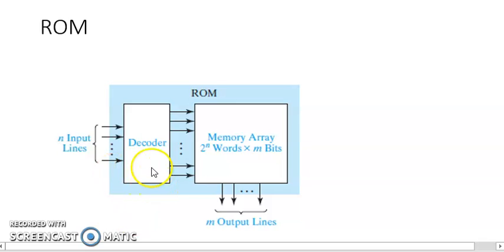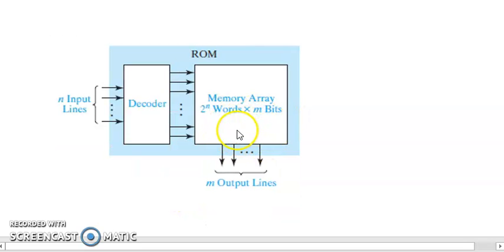ROM basically consists of a decoder and a memory array. When a pattern of n zeros and ones is applied to the decoder input, exactly one of the 2ⁿ decoder outputs is high. This decoder output selects one of the data in ROM memory. With 3 inputs, we have 8 minterms across the decoder. The memory array forms output functions by ORing together selected minterms.